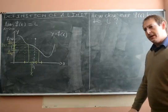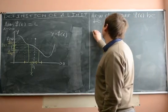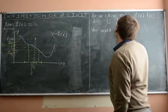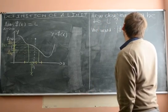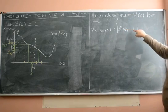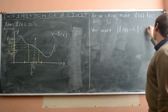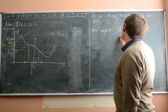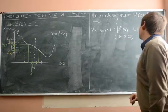Now, we first have to start by saying, well, how close do we want f(x) to be to L? Well, let's say that we want that the distance between f(x) and L, which is given by absolute value of f(x) minus L, must be closer than epsilon. And epsilon is some positive number.